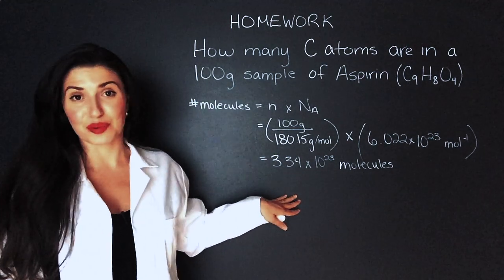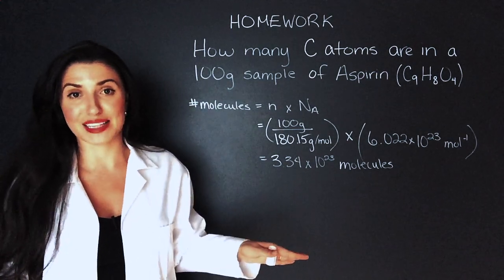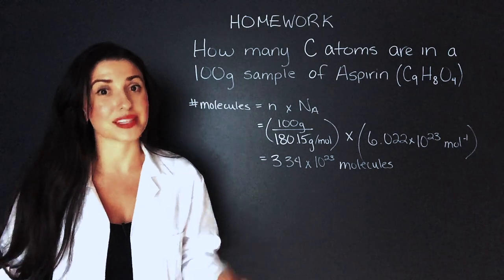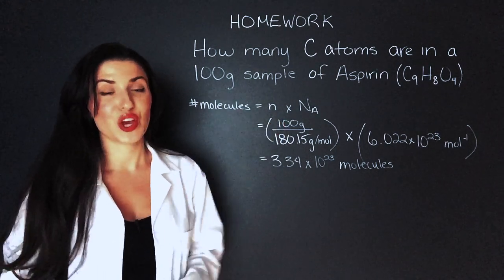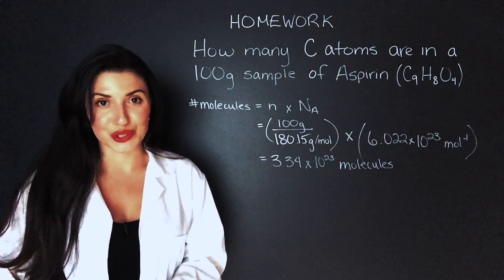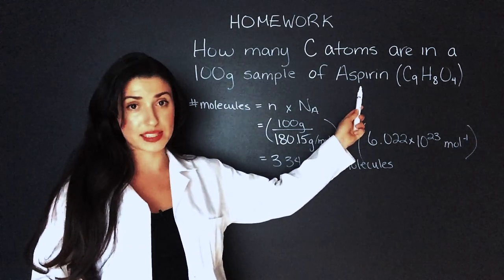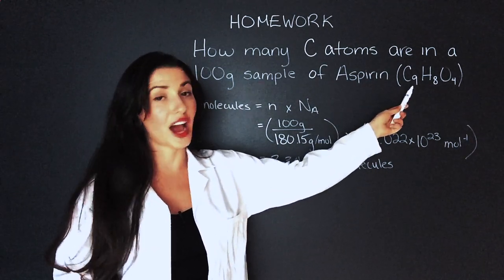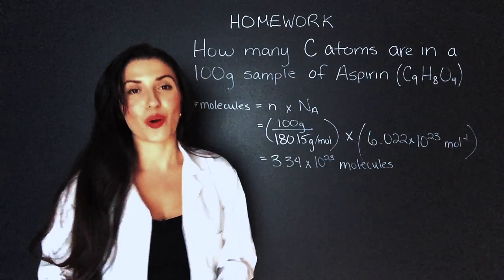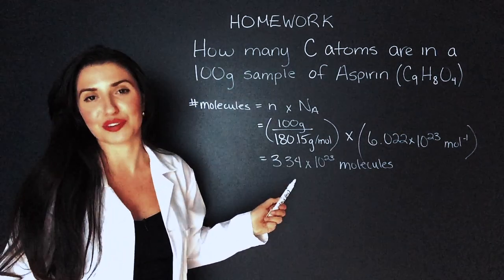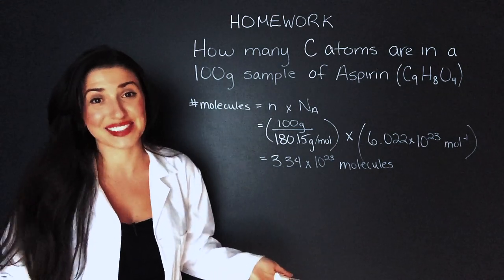Now we know the number of molecules in this sample of aspirin but we still don't know the number of carbon atoms and that's what the question asks. So the thing to do is that we know that in one molecule of aspirin we have 9 carbon. So all we have to do is multiply this number of molecules times 9.